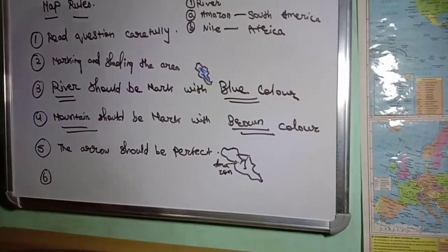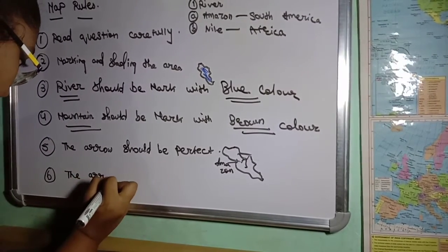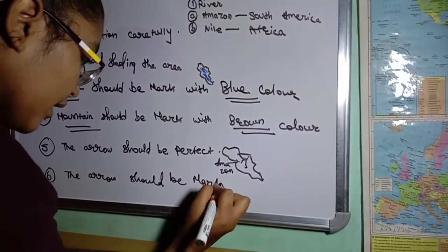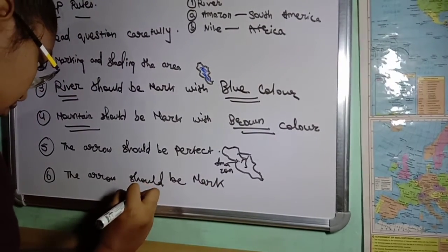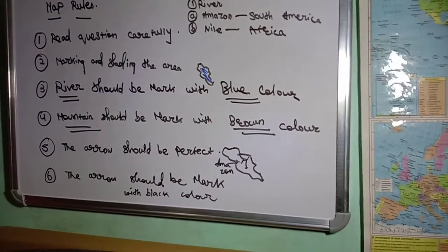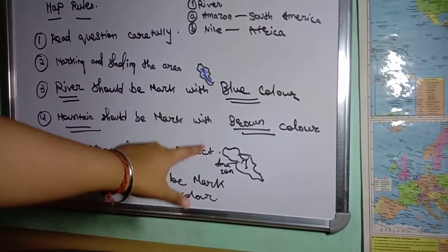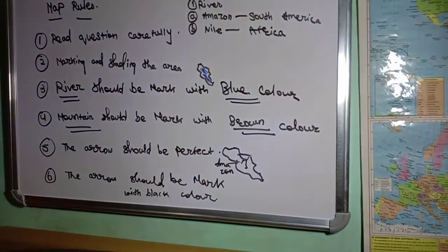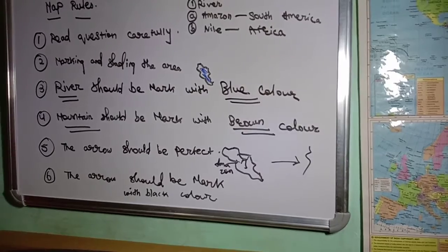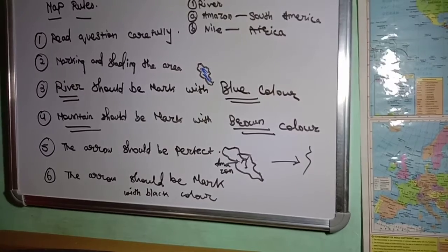Sixth point: the arrow should be marked with black color. The arrow must always be in black color. For example, where there is a river, you mark the river and then use a black color arrow to point to it.